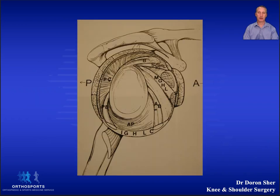From its name we know that the glenohumeral joint is made up of the round humeral head and the flat glenoid. The humeral head is large compared with a shallow glenoid fossa, and the inherent stability of the glenohumeral joint relies heavily on glenoid version and soft tissue stabilizers.